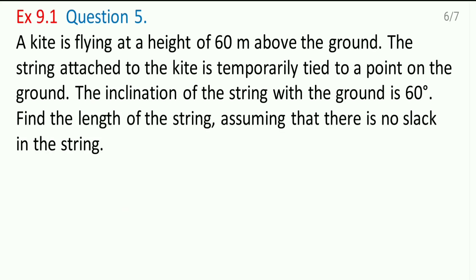A kite is flying at a height of 60 meters above the ground. The string attached to the kite is temporarily tied to a point on the ground. So one point is there on the ground.